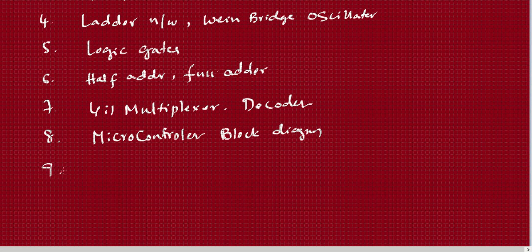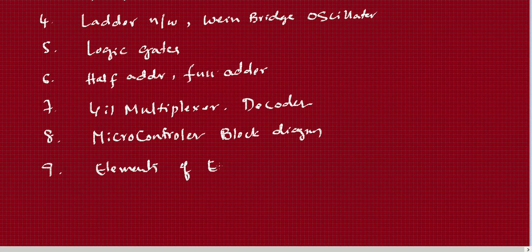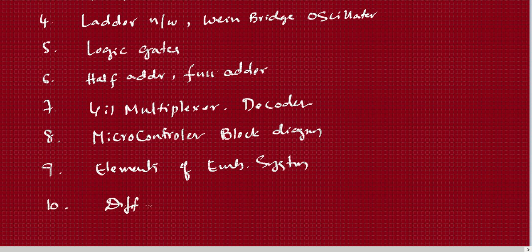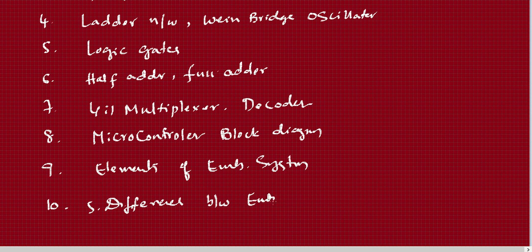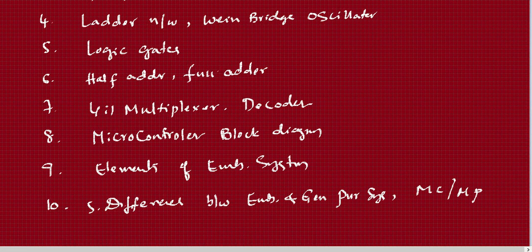Coming to Module 3, elements of embedded system is a very important topic. In this chapter you will have differences to write — around five differences between embedded system and general purpose system, and also differences between microcontroller and microprocessor.